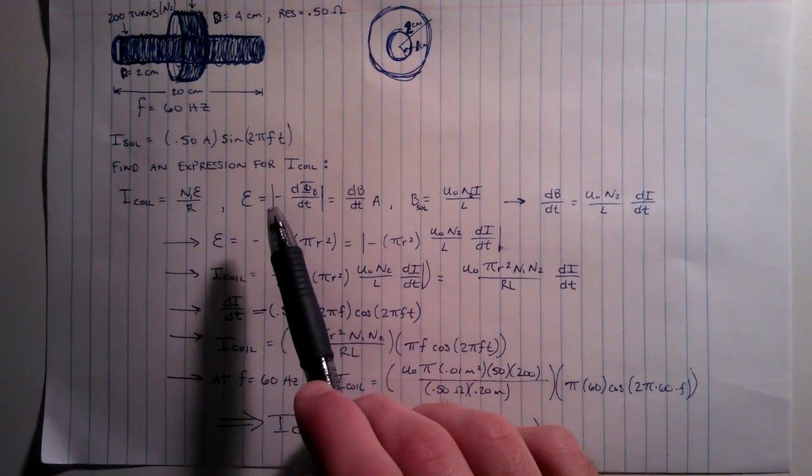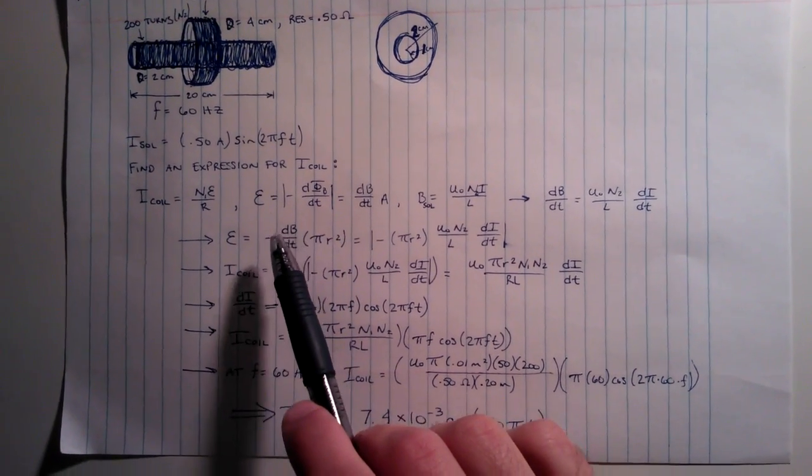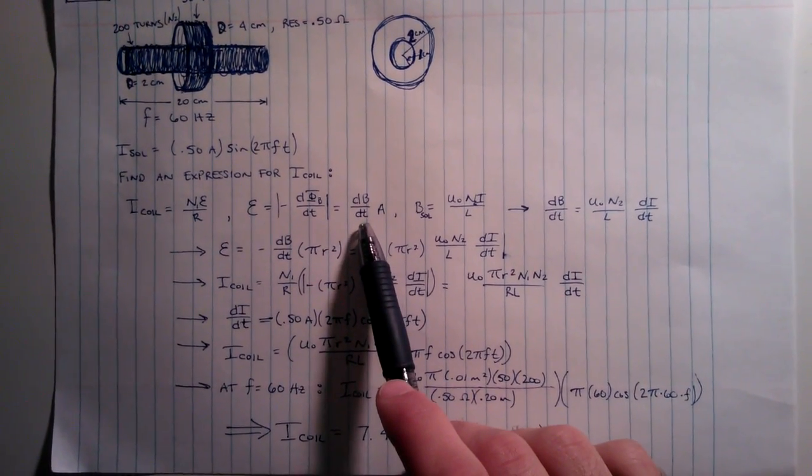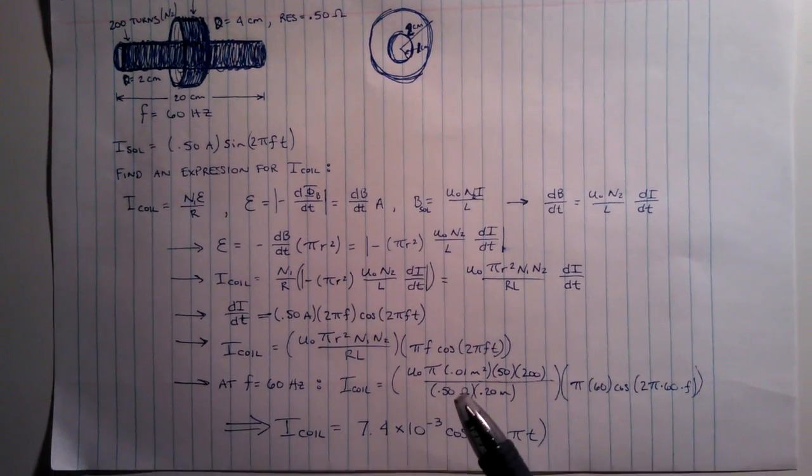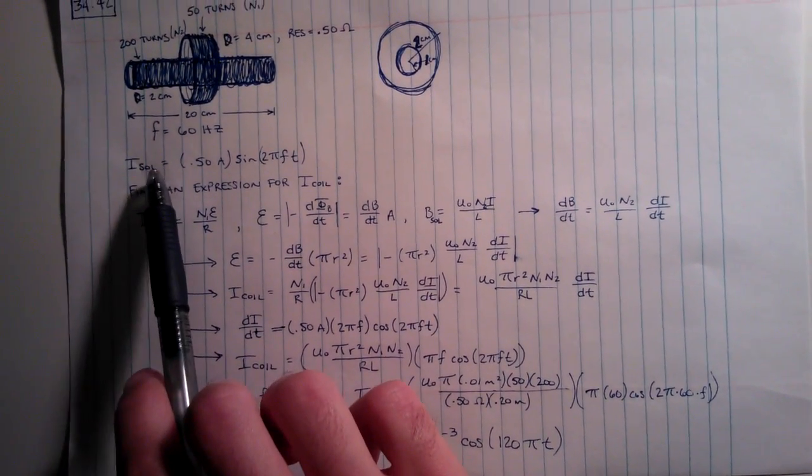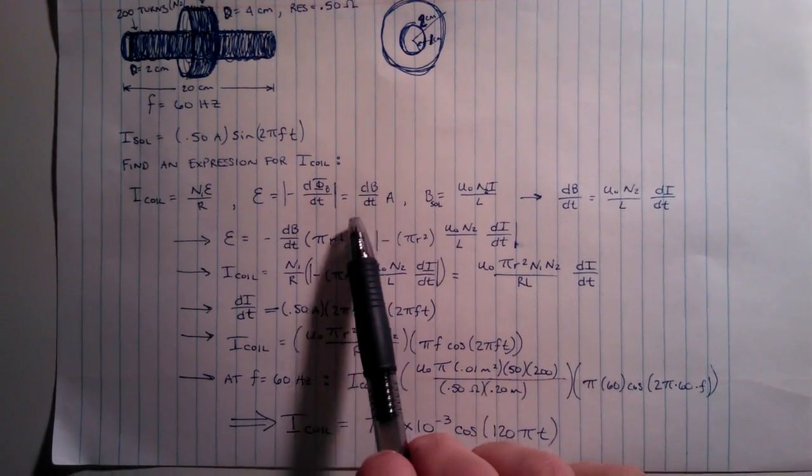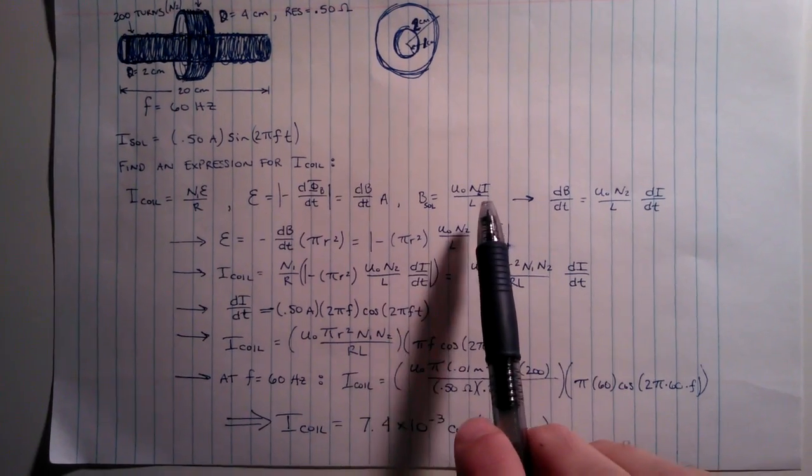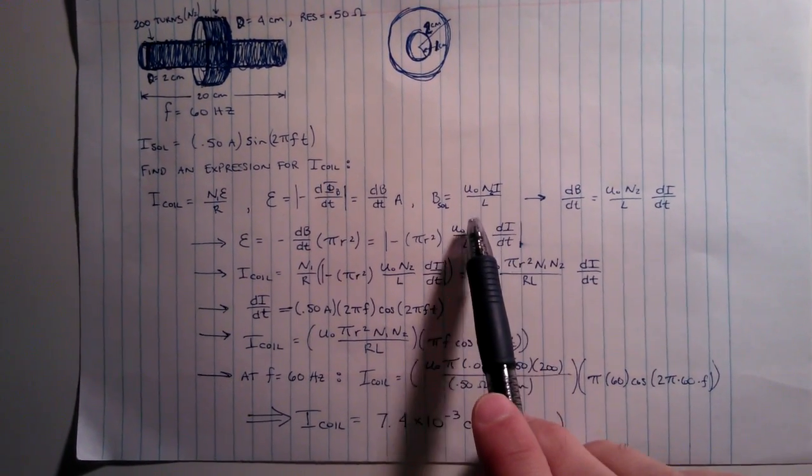You know that your electric potential is also equal to the change in flux over the change in time which is also equal to the change in magnetic field over time times the area. Now because you have an expression for the current you also know that the magnetic field is changing and you know that the magnetic field for a solenoid is μ₀NI over L.